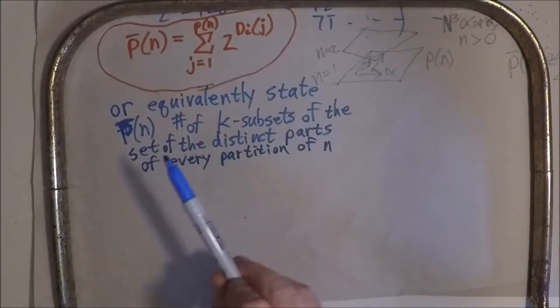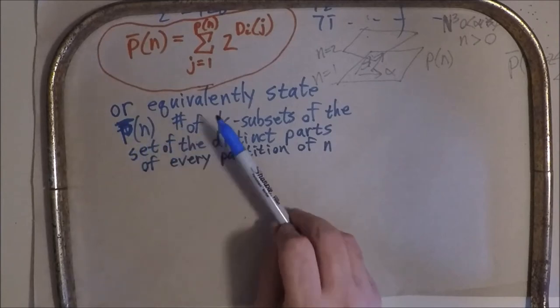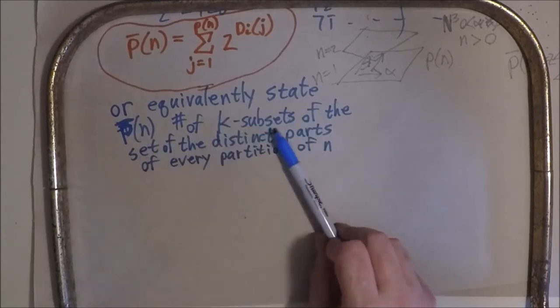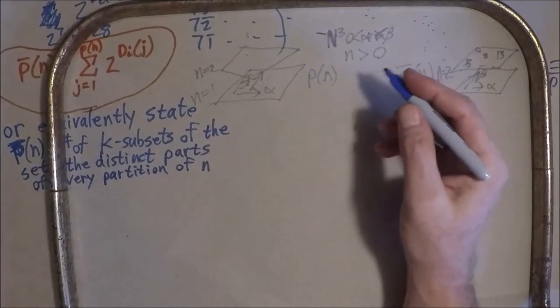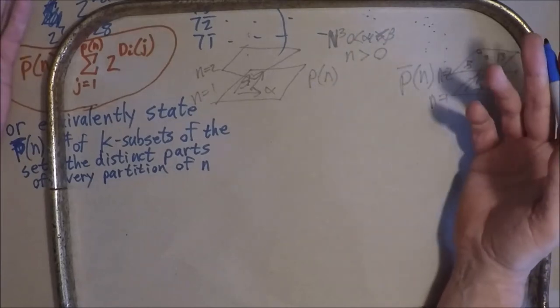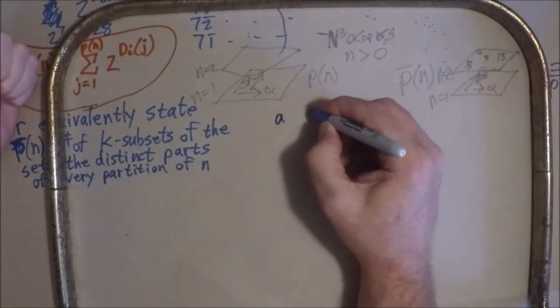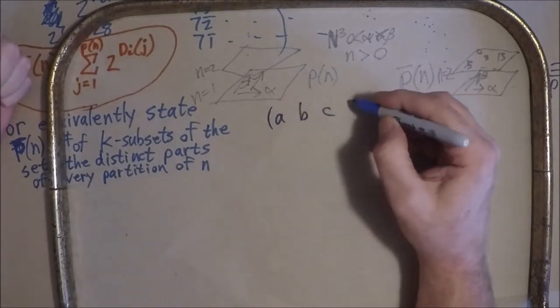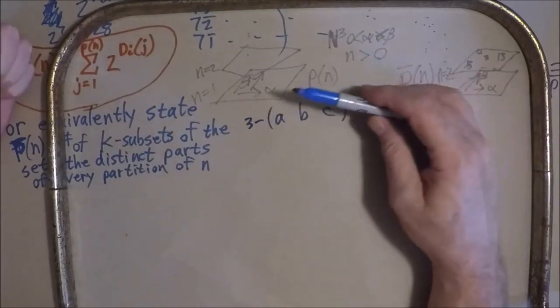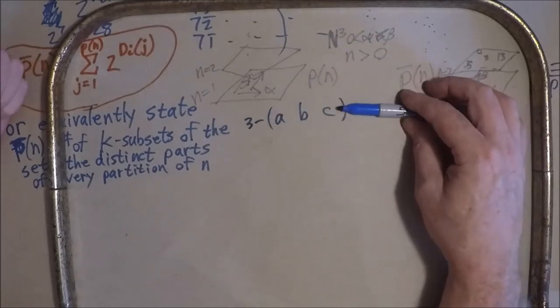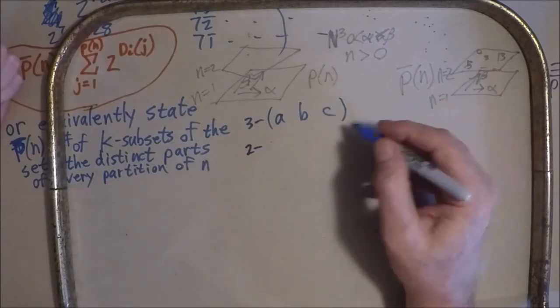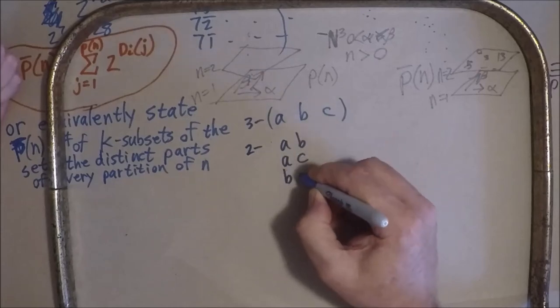More equivalently, we can state that over partitions of n are the number of k subsets of the set of the distinct parts of every partition of n. k subsets just refers to all the possible subsets of the set. The set has no repeated elements, so, if we have a set a, b, c, we say that this is the, we can say this is the 3 subset. This is a 3 subset, meaning there's 3 elements, and there is only 1. In terms of 2 subsets, we have a, b, a, c, b, c. We have 3, 2 subsets. And for 1, then it's just, it's, we have 3, a, b, and c.